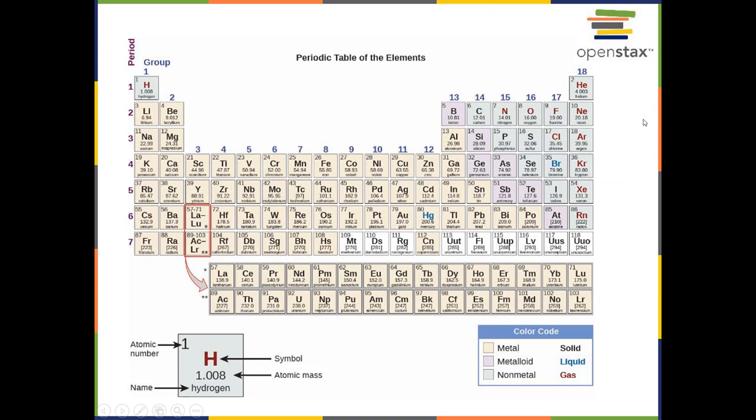Alright, so here is the periodic table. Let's just talk about a few things on it. One are these group numbers. We'll come back to this a little bit later in the presentation. But each one of these groups has elements that share similar properties.